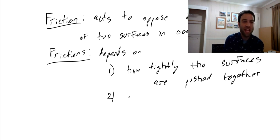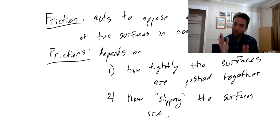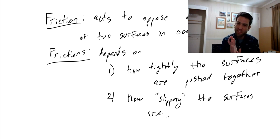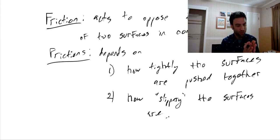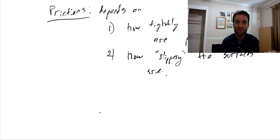Second, friction depends on how slippery the surfaces are. If you take two pieces of sandpaper and rub them against each other, there's a lot of friction. If you flip them over and rub just the plain paper side, there's a lot less friction. That makes a lot of intuitive sense.